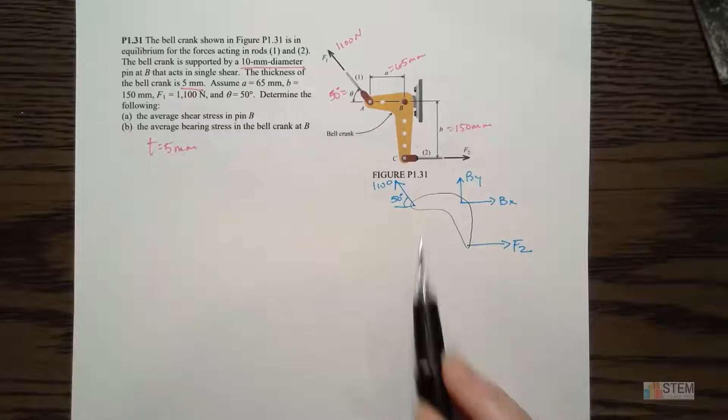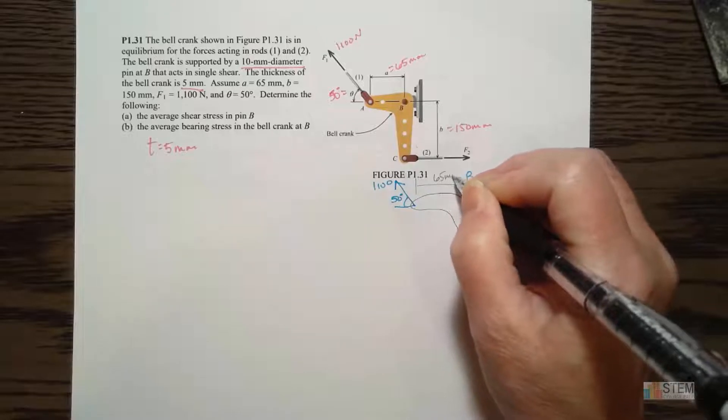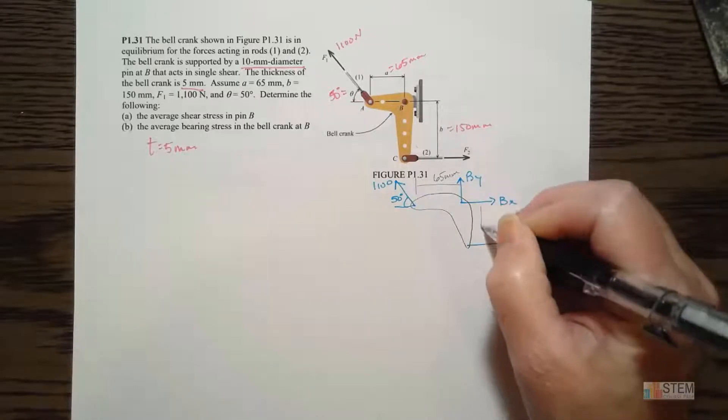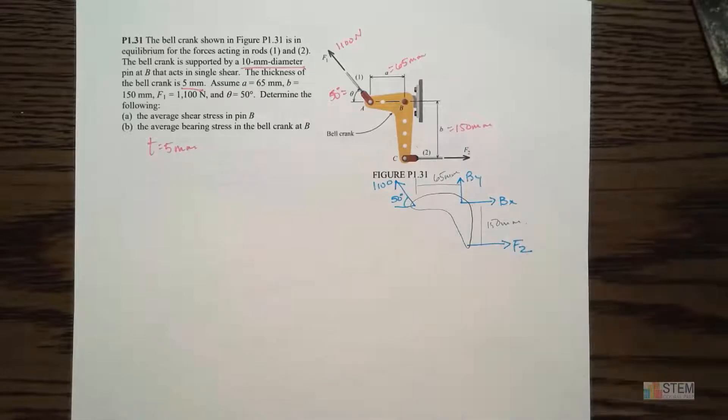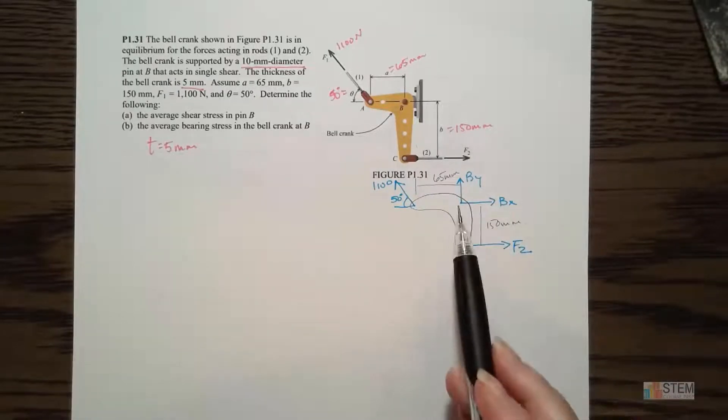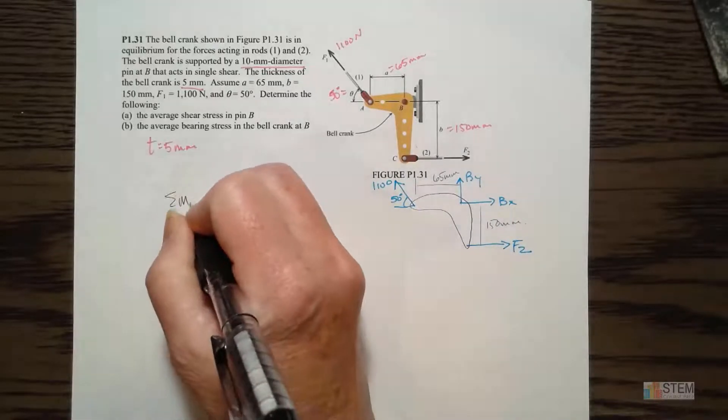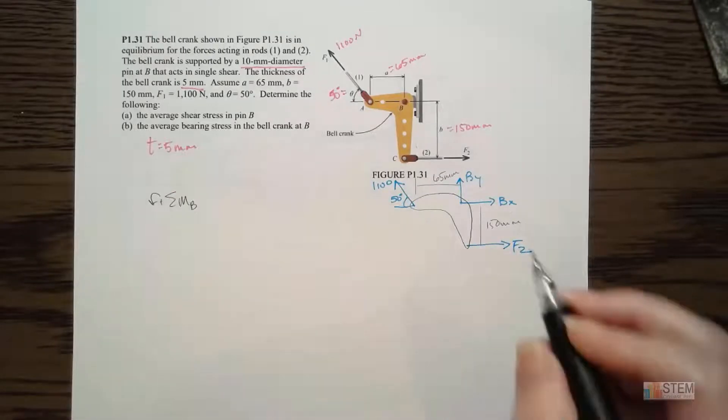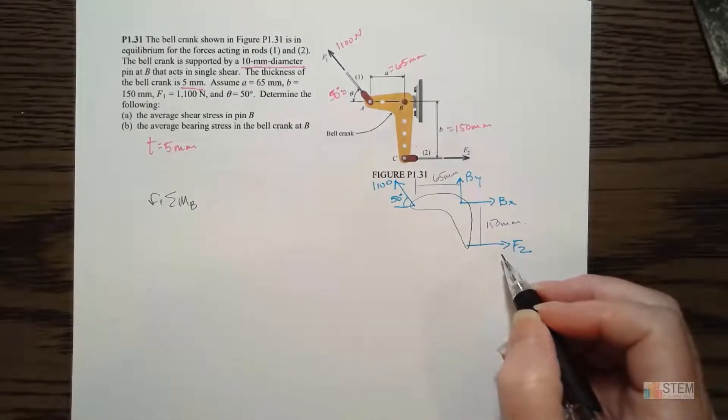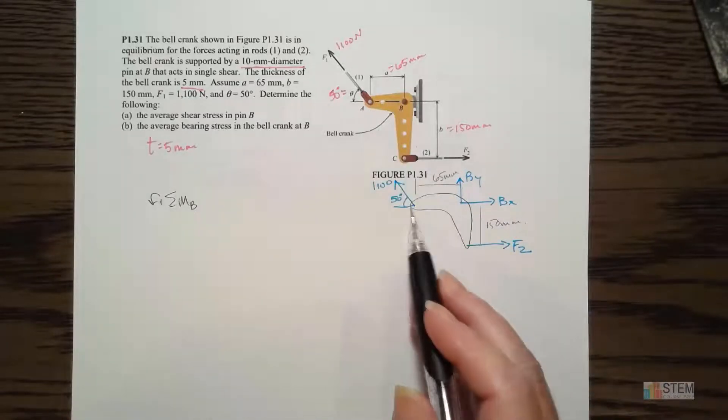So we've got that, and now we know our distances also. This is 65 millimeters, and then this distance here is 150 millimeters. Perfect. So now we can go ahead and do our equations. We've got three unknowns, three equations. I'm going to go ahead and start with a moment at B so that I can find F2.